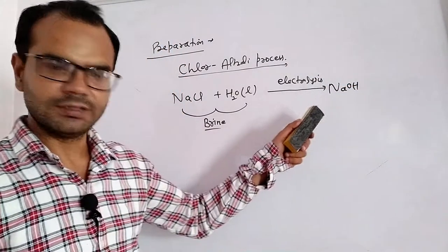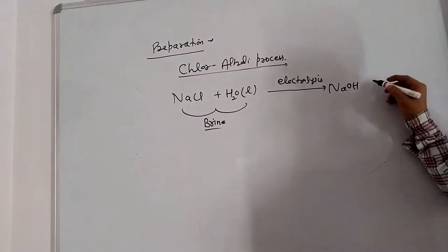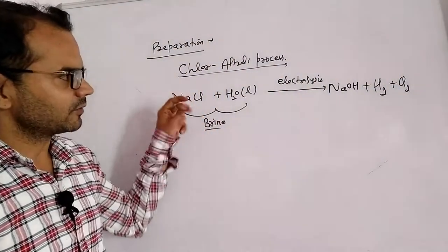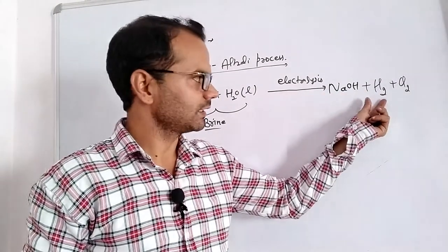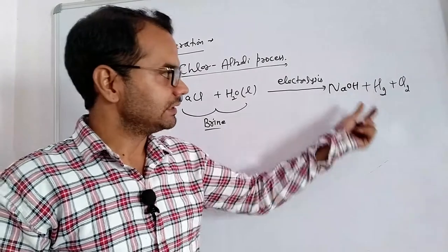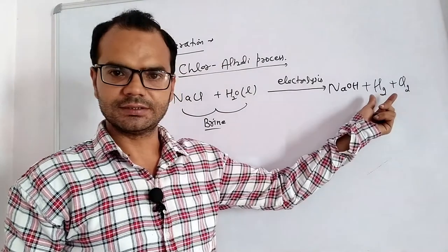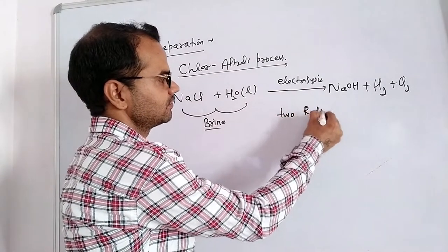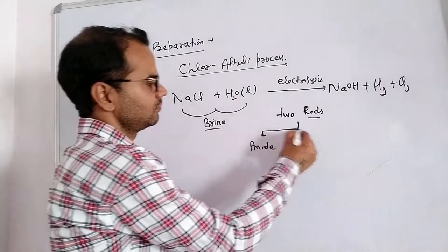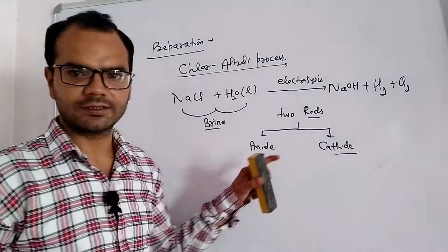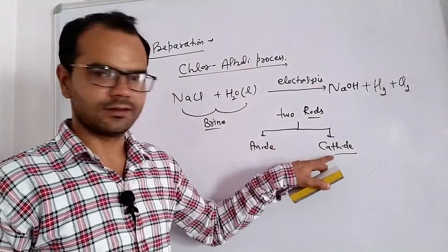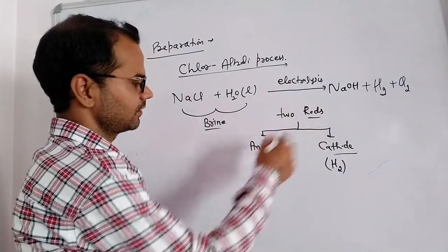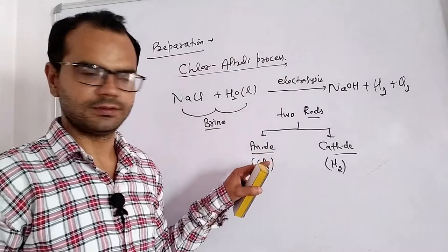As a result, sodium hydroxide is formed and two gases are evolved: H₂ and Cl₂. So in the chlor-alkali process we obtain sodium hydroxide, hydrogen gas, and chlorine gas. In the electrolytic cell we have two rods — anode and cathode. Hydrogen gas is liberated at the cathode and chlorine gas is liberated at the anode.